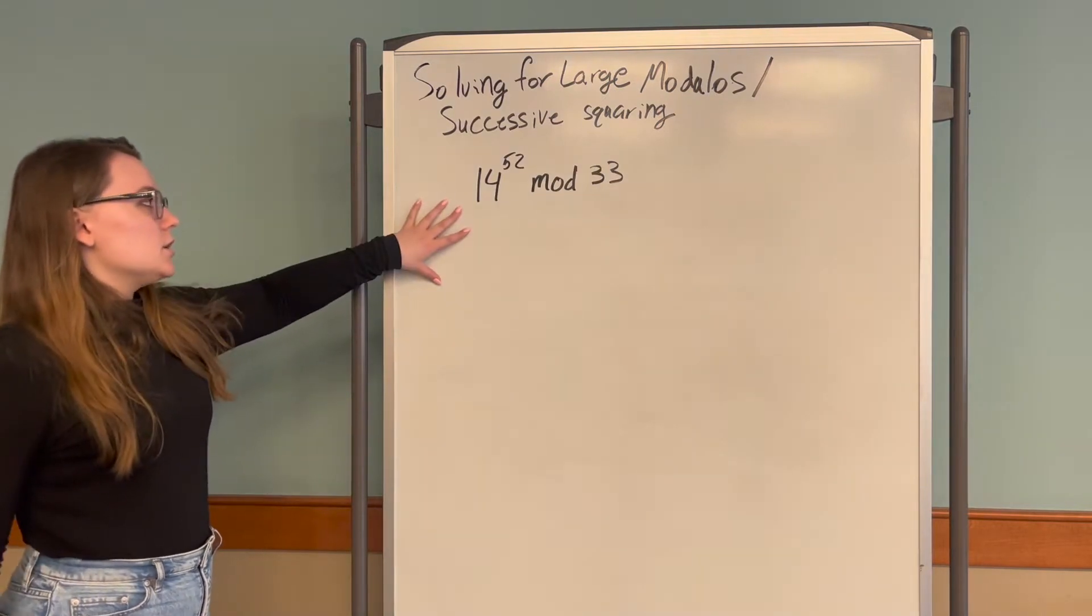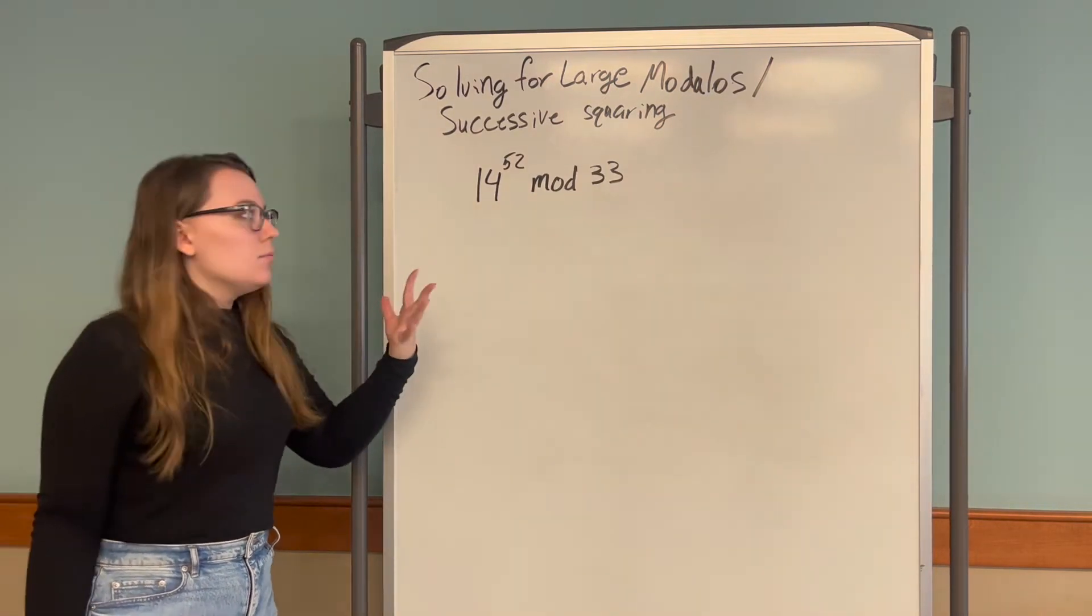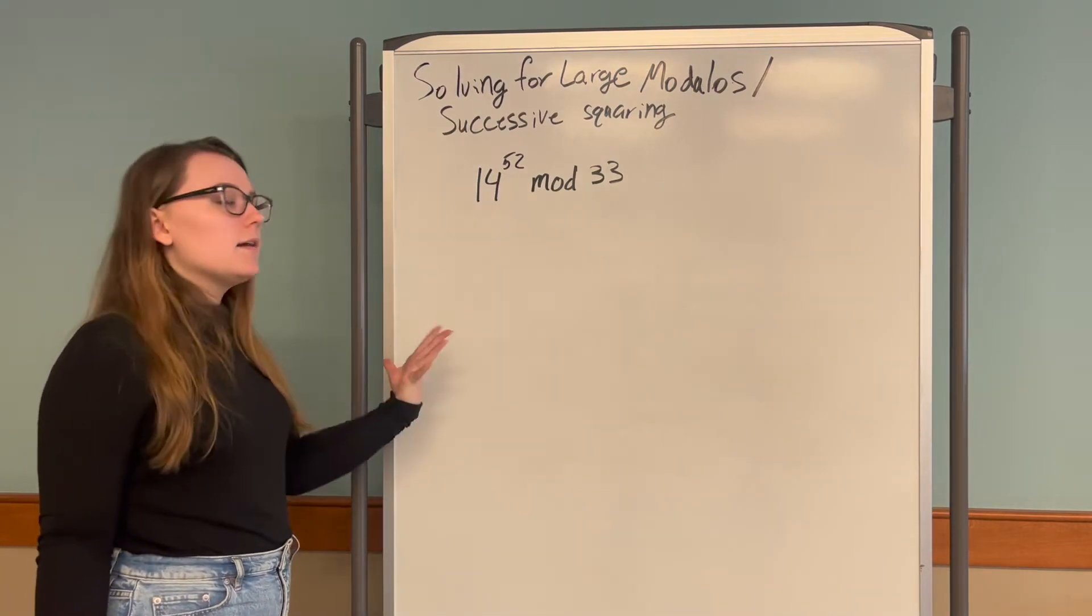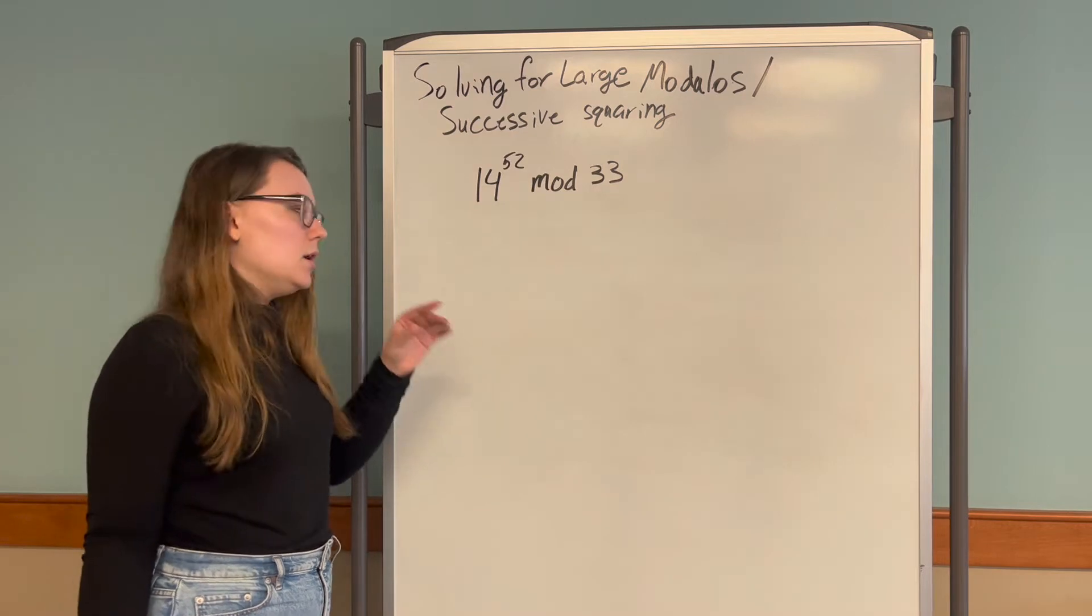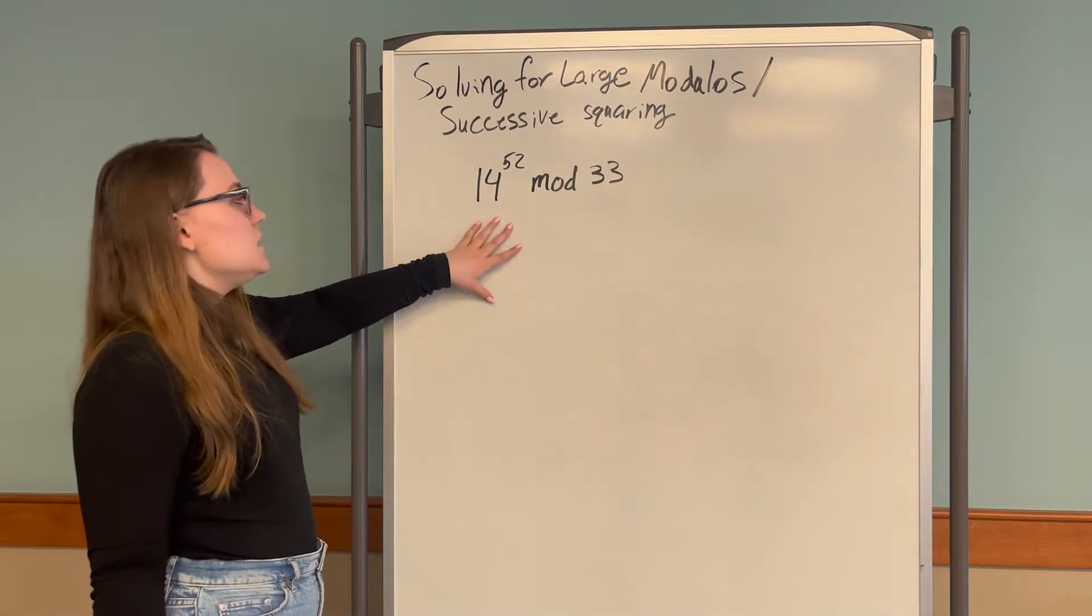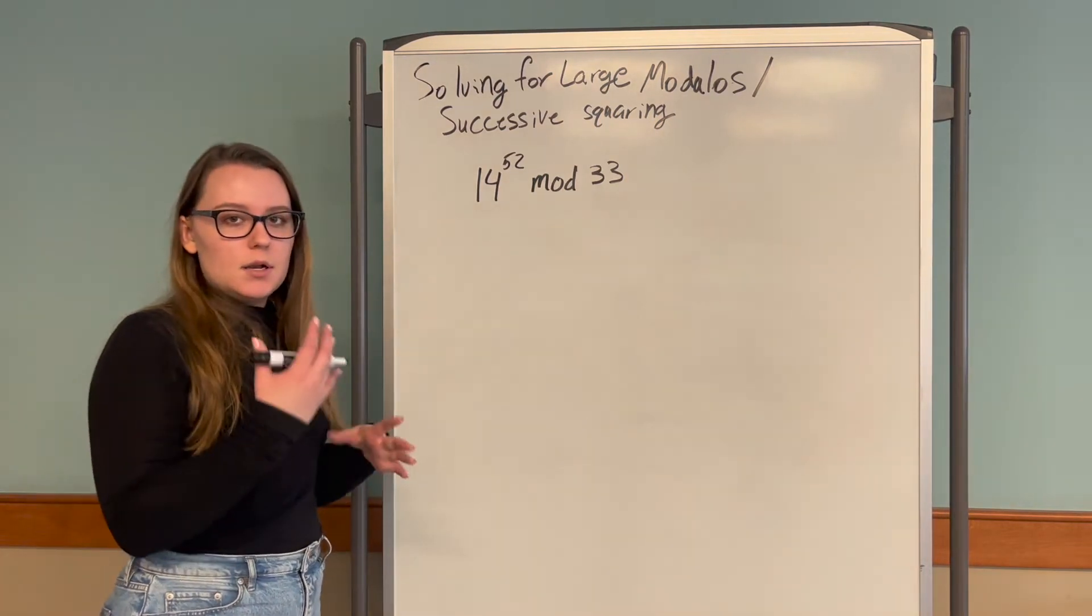Say we wanted to solve this congruence 14 to the 52 mod 33. Now 14 to the 52 is a huge number and isn't exactly feasible for us to calculate. So we use successive squaring to split up our 14 to the 52 into smaller numbers that are easier to work with.